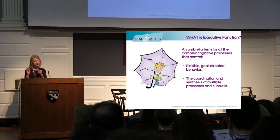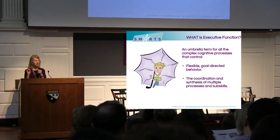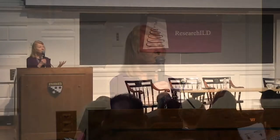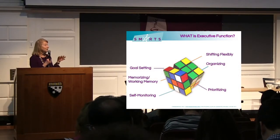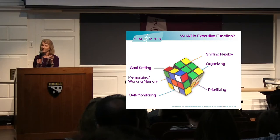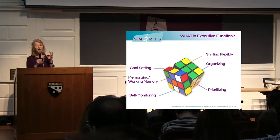The second key thing is the coordination and synthesis of multiple processes and subskills — the ability to pull together different pieces of information, to synthesize and integrate them. We also know that executive function is controlled by the frontal and prefrontal cortex, and aspects of the parietal lobe. The analogy I use is that of a Rubik's cube, because the processes interconnect so closely that we cannot see them as separate.